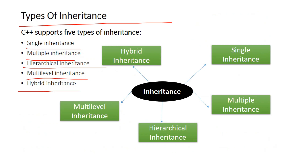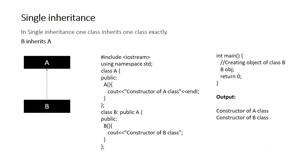In single inheritance, one class inherits one other class. There is one derived class in single inheritance.